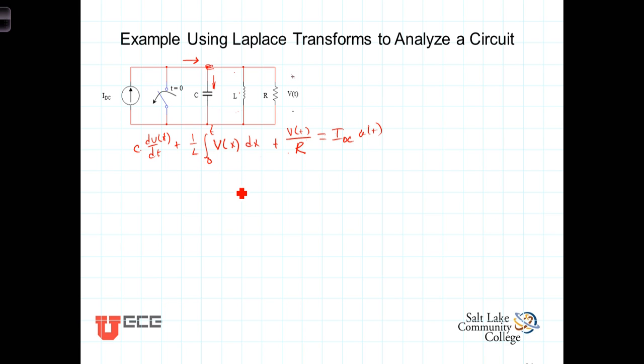We know that when we take the Laplace transform of the derivative, we have, of course, starting out here with C, times the Laplace transform of the derivative, you'll recall, was S times the Laplace transform of the function itself. The Laplace transform of V of T is V of S, and then we had to subtract off the initial value of V of 0 minus. Now, the Laplace transform of the integral is 1 over S. I've got a 1 over L there, so it would be 1 over S times 1 over L, or 1 over L S times V of S. In other words, Laplace transform of the function itself.